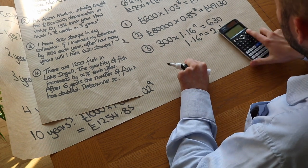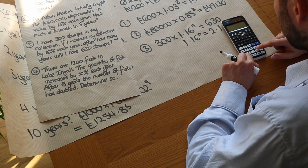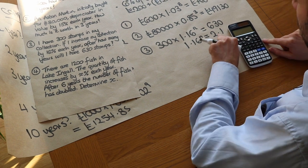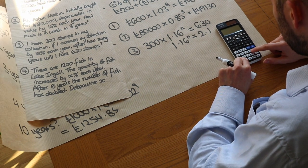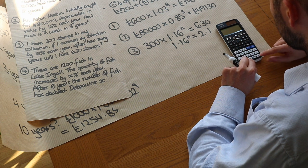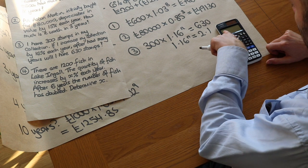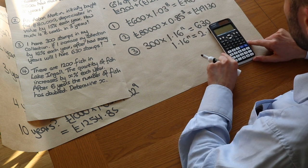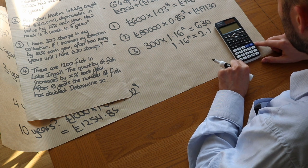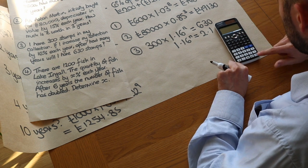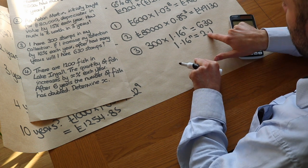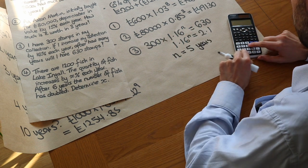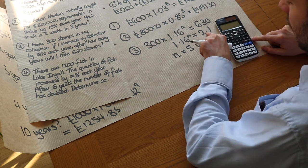At GCSE you're expected to do this by trial and error. Squaring 1.16 gives 1.3456 — not up to 2.1 yet. Cubing it gives 1.56. Then using the answer key times 1.16 on the calculator, power four gives 1.18, and pressing equals again gives power five, which equals exactly 2.1. So n equals five years, because 1.16 to the power of five is 2.1.